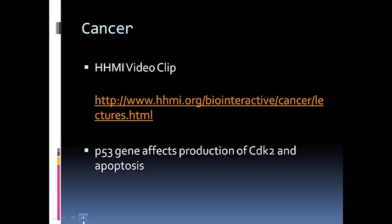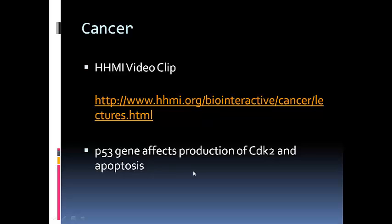If you're interested and want more information, there's a video clip linked from HHMI — they do a bunch of cancer research among other things — and they talk about the genetics of this. There's a particular gene in your body that affects the production of CDK2 and programmed cell death, called apoptosis, when cells are supposed to be done growing, done reproducing, and are supposed to die. If you're interested, you can link to that and watch that video.